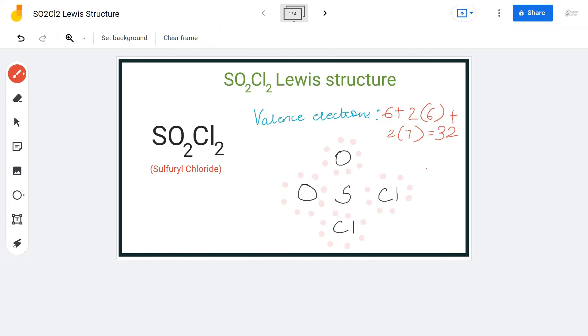But if you calculate the formal charges for this molecule, you'll come across a formal charge of plus two on the sulfur atom and minus one on each of these oxygen atoms. Generally we try to offer structures in which we have formal charges as close to zero.